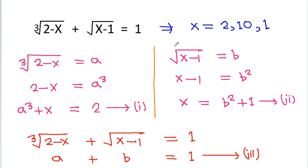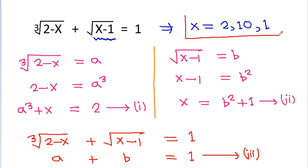Now if we check the domain, a square root can never be negative, so x minus 1 cannot be negative. For any valid value of x, x minus 1 must be greater than or equal to 0, meaning x must be greater than or equal to 1. All three values x equals 1, 2, and 10 satisfy this condition.